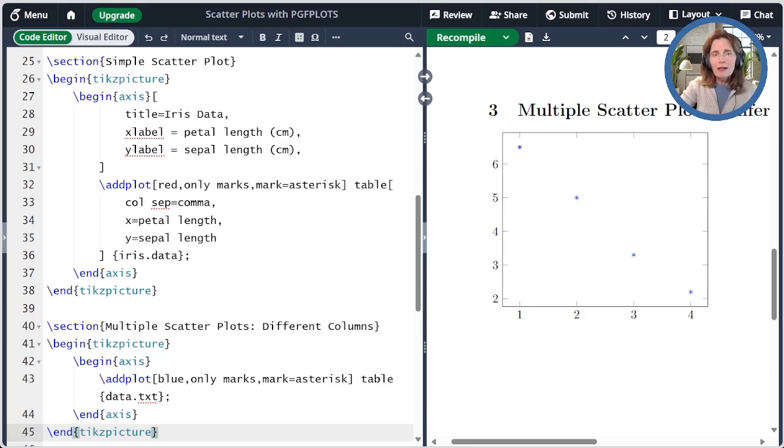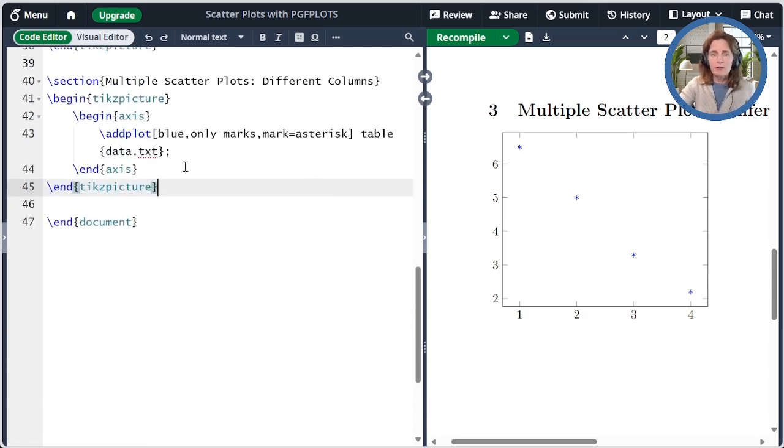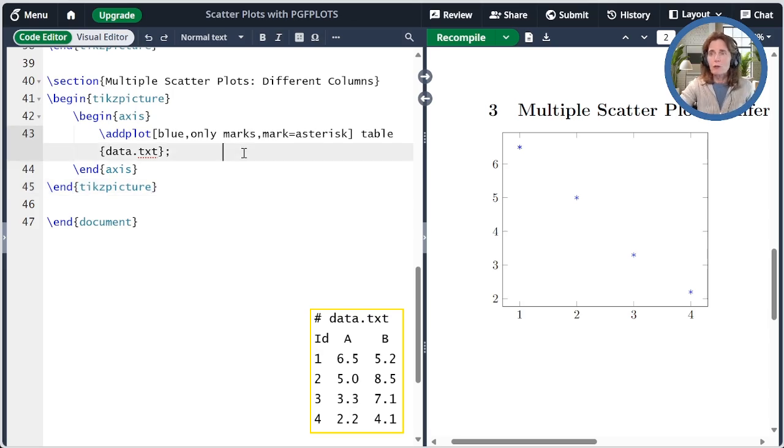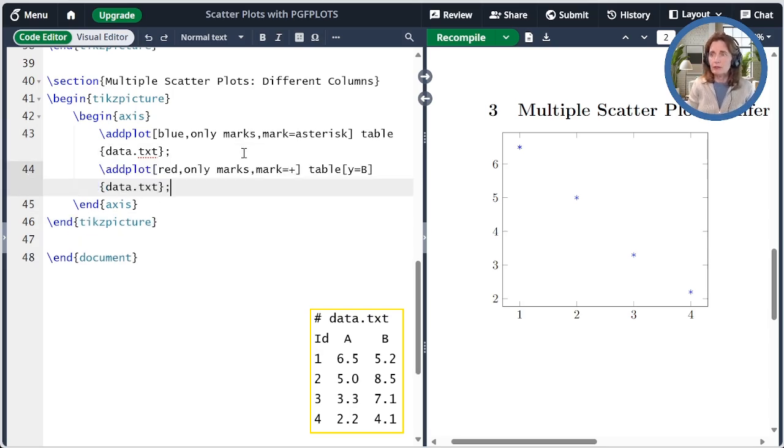Now we can plot another column from the same data file. So remember that this is plotting column A as the y values by default, and the ID are the x values by default, because it's always the first and second column correspond to x and y. We want to use a different set of y values. We can specify a different choice for y. So in this new addplot command, I'm specifying y equals b. I'm also changing the color and the mark. When I recompile that, then I see that I have both sets of values plotted in different ways.